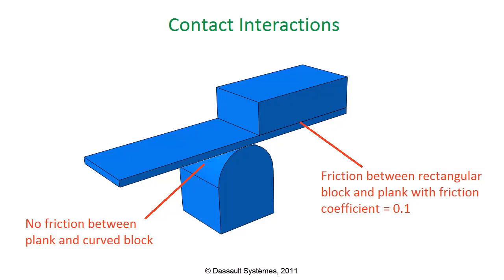We will apply frictionless as a global property. When this is done, all contacts detected by Abaqus' general contact algorithm are automatically assigned to the frictionless property by default. Individual contact interaction property assignments can be specified for surface pairs that should not use the globally assigned interaction properties. We will do this for the contact between the curved block and the bottom of the plank, making one contact interaction frictionless and the other frictional — creating the same setup we had in the contact pairs tutorial.